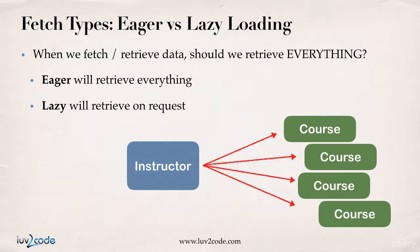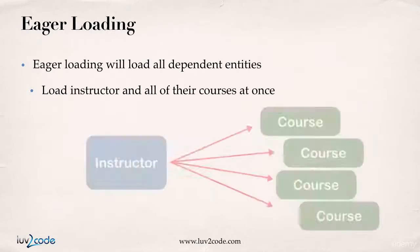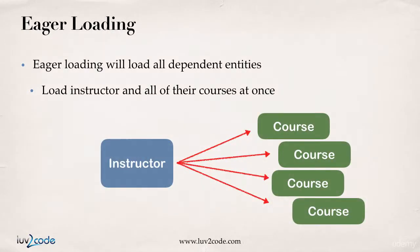It also has an implication on the actual performance of your given app. With eager loading, it'll actually load all your dependent entities. So it'll load the instructor and all of their courses at once — one quick shot to the database, grab all the data, and bring it back. This may not be a big deal if you only have a small number of instructors and a small number of courses, but if you had a lot of data, that could actually impact the performance of your application.